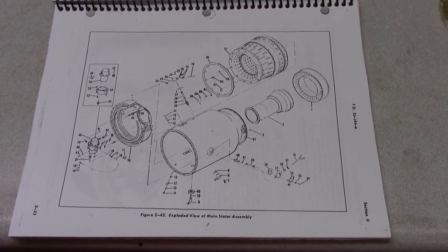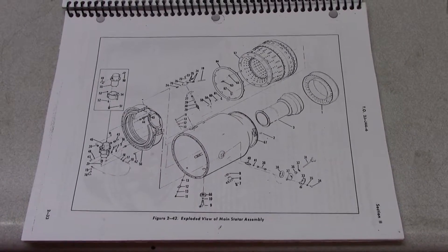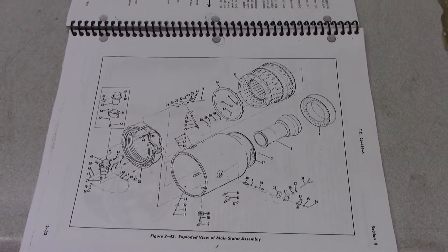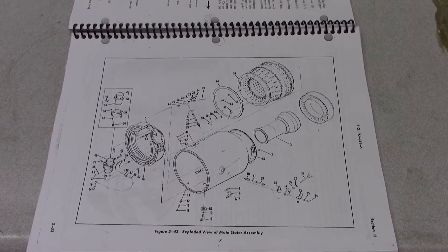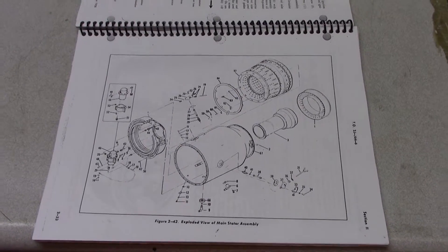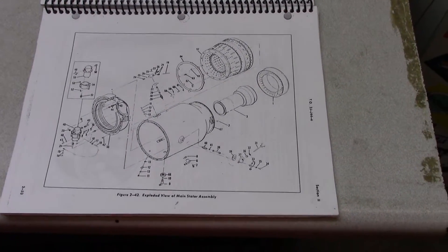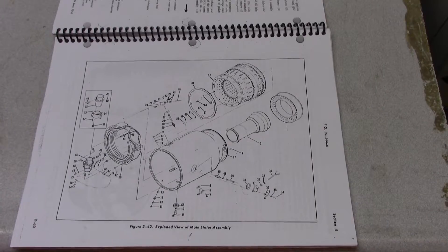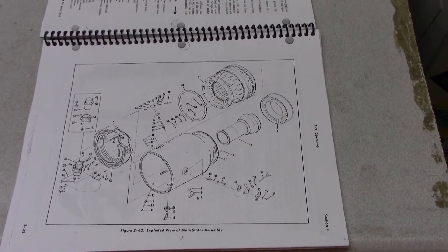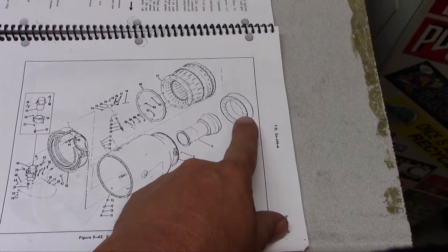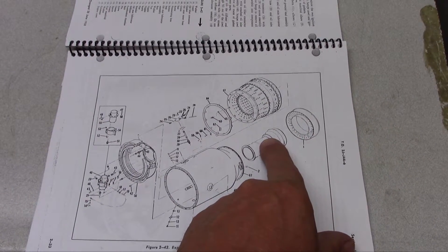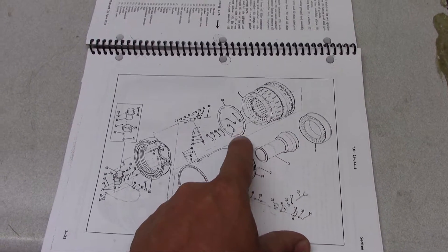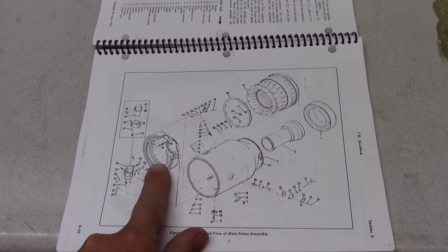Here we have an exploded view of the main stator assembly, basically that outer cowling we referred to, then the combustion chamber. Notice it has the diffuser assembly in there, the fuel ring or fuel nozzle manifold, and the fuel nozzles. It shows the combustion chamber inner liner and the turbine nozzle.